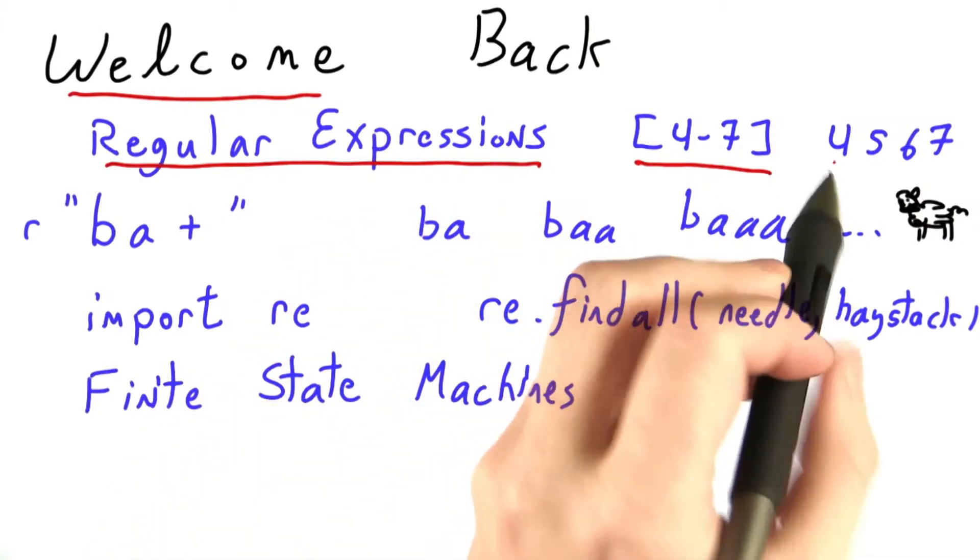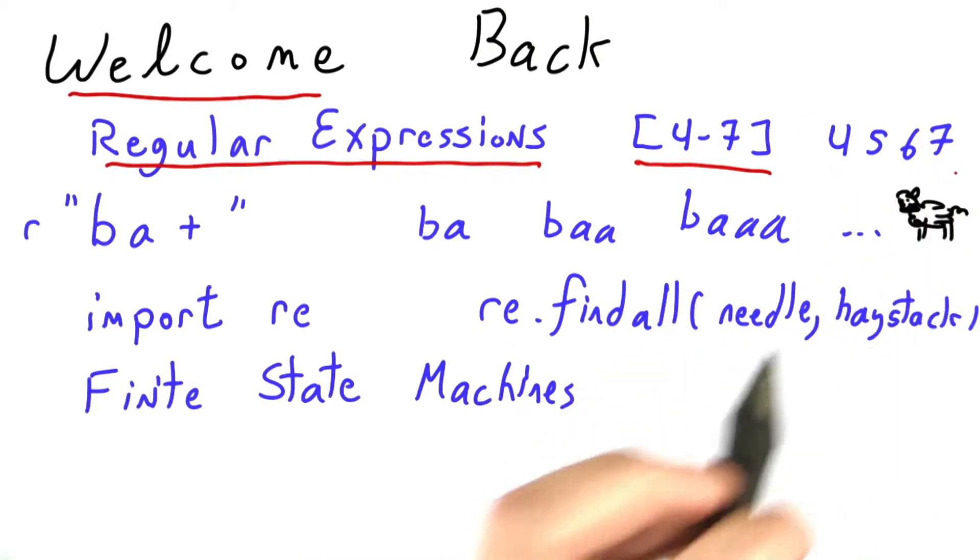So this 4 through 7 in brackets corresponds to 4 different strings: 4, 5, 6, and 7.